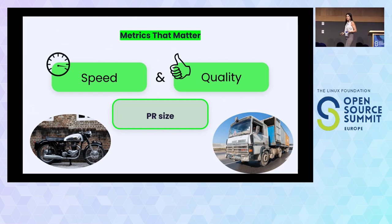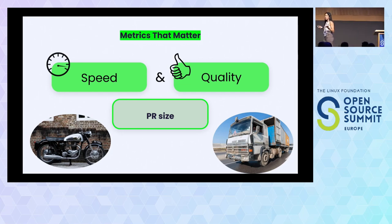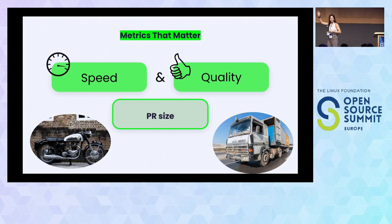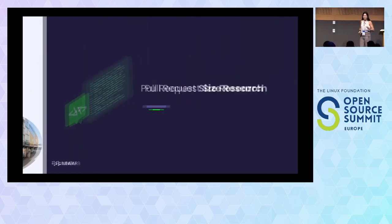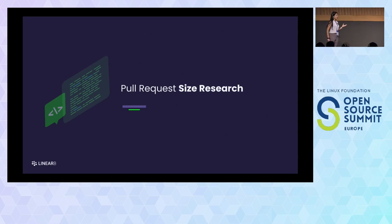Another metric not directly in DORA but that really affects all of these metrics is PR size — pull request size. We saw there is a really deep relation between pull request size and our speed and quality. PRs under 200 changes will probably get merged faster. Big PRs are very scary to review — when I get a big PR, I don't know what to do with it. I'll probably return it to the developer and tell him to organize it, because I cannot review it. With a small PR, I'll have a much better review experience.